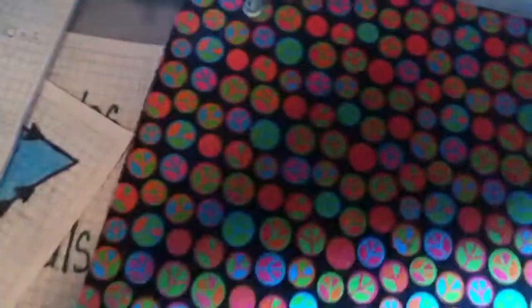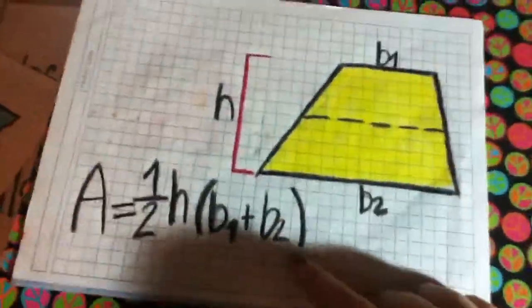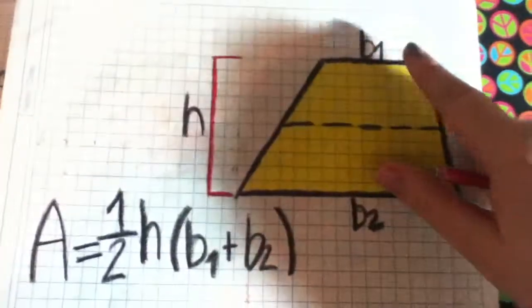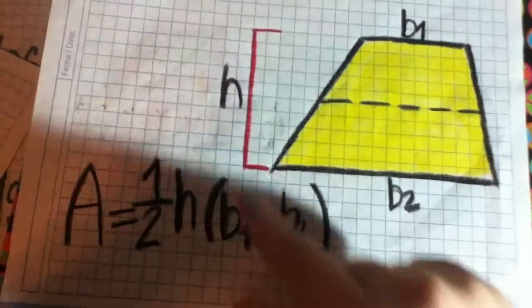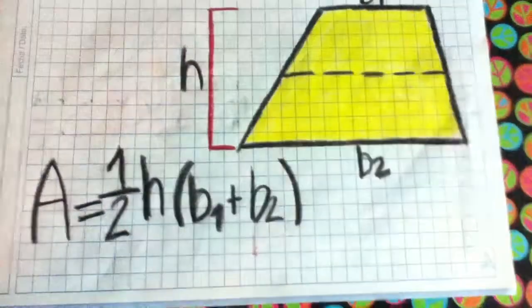Now we're going to make some trapezoid areas. This is a little bit more complicated. We have base 1 plus base 2 times the height, half. So let's start.